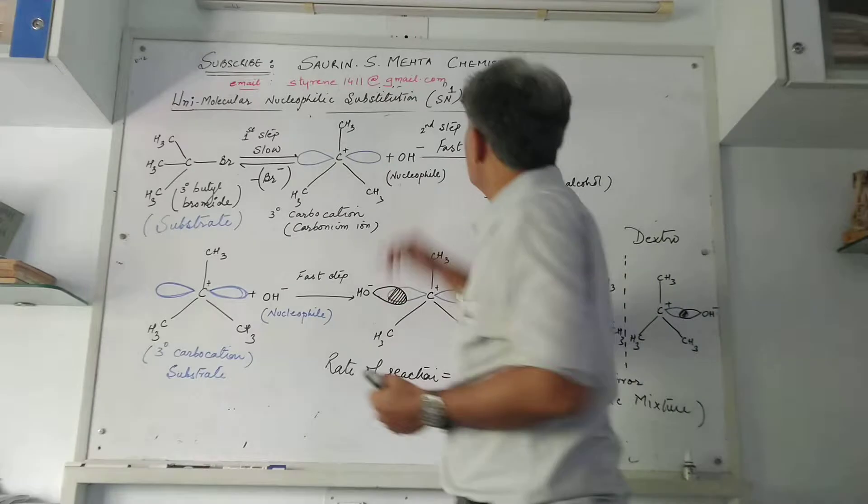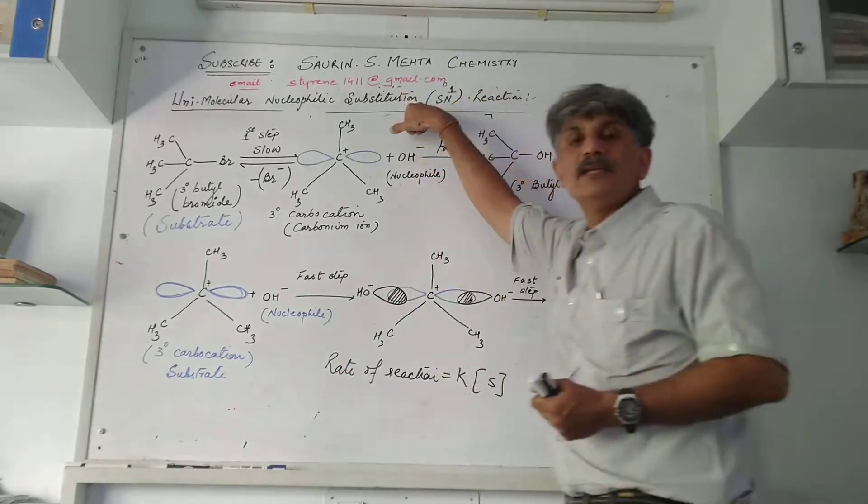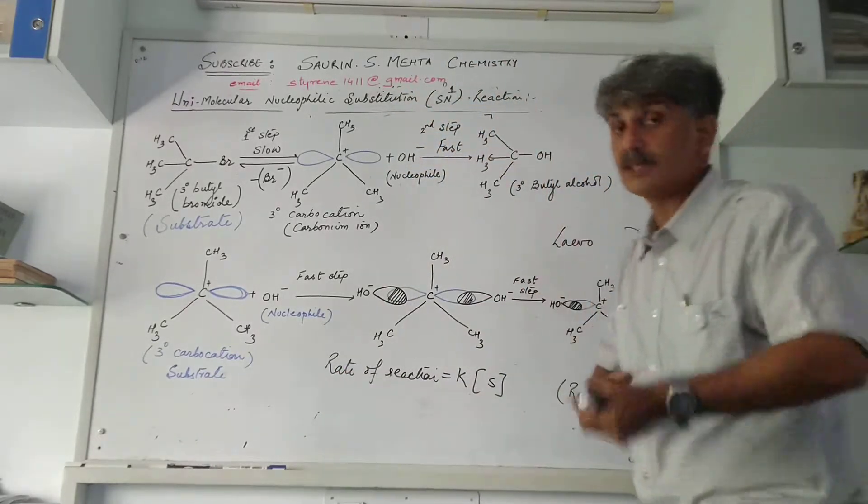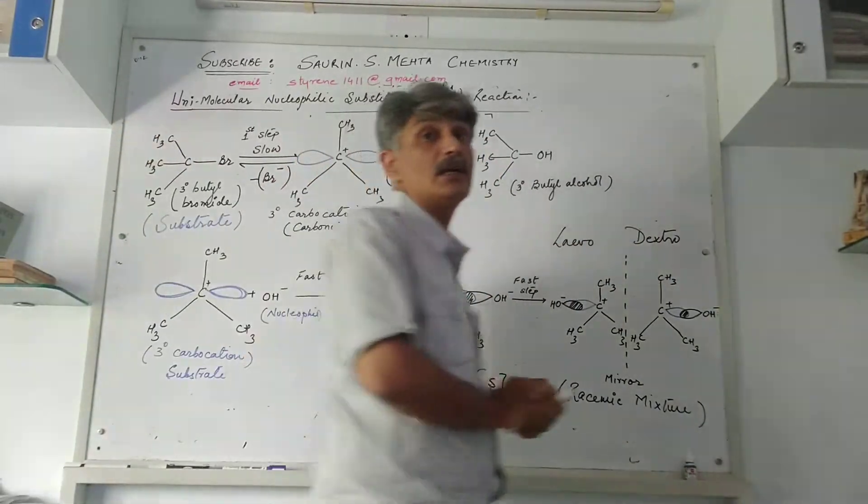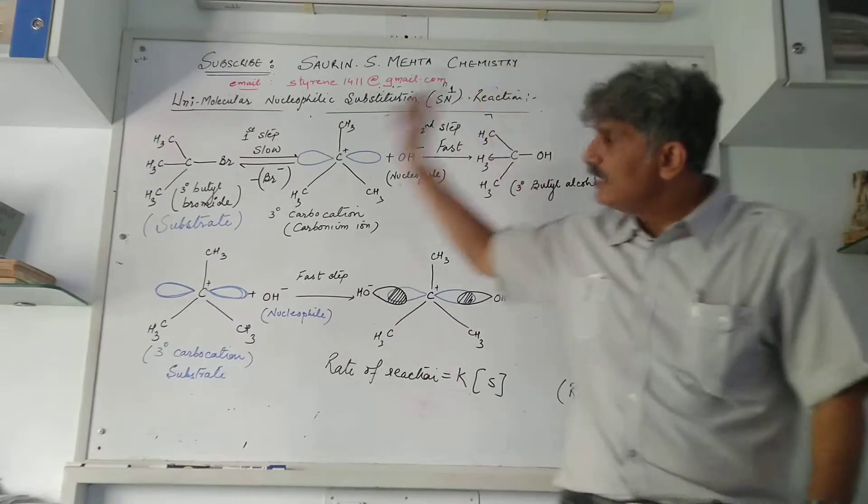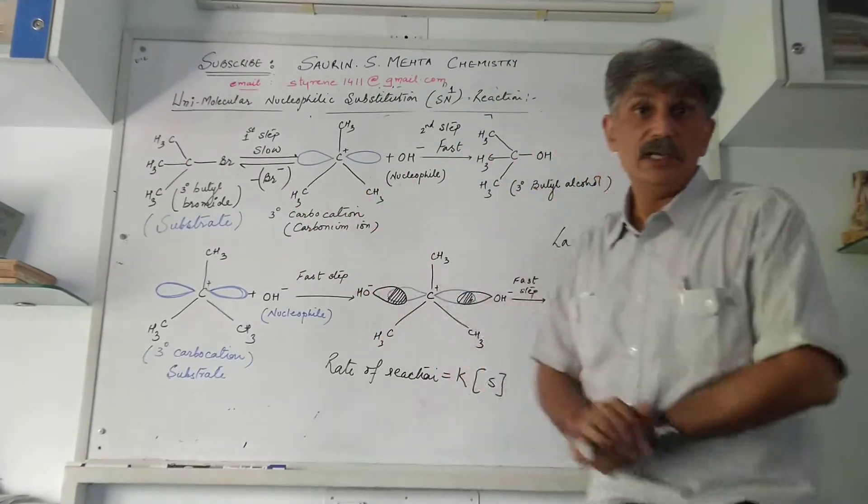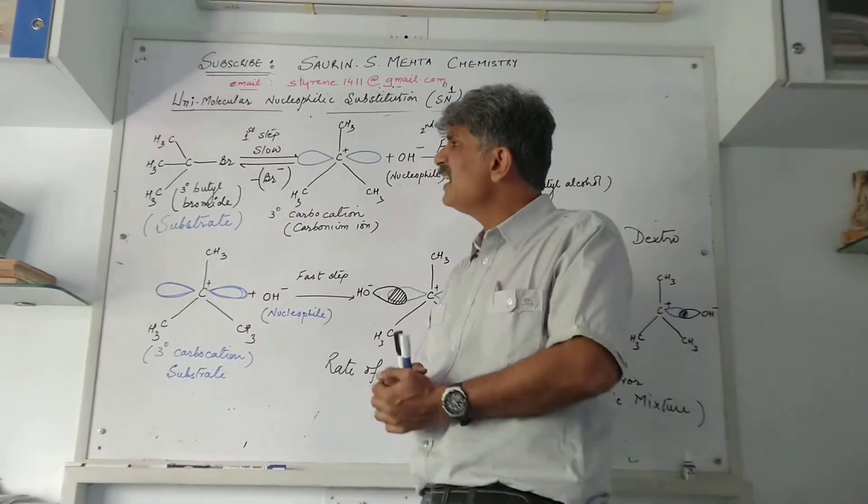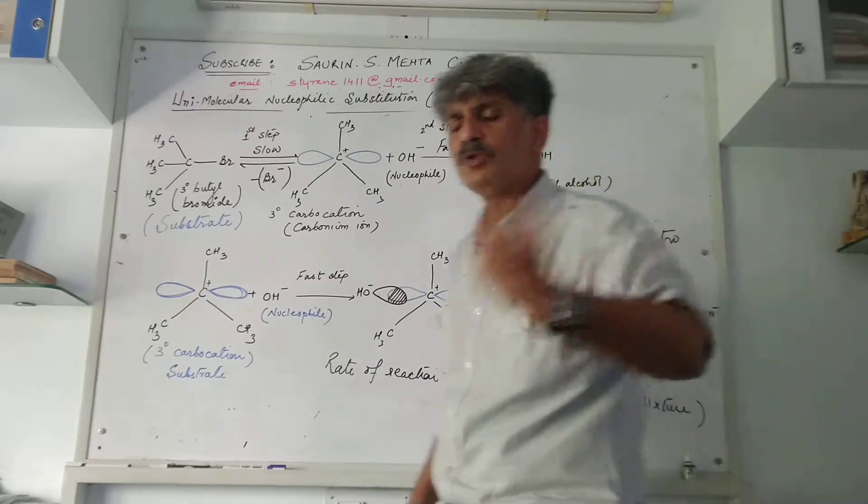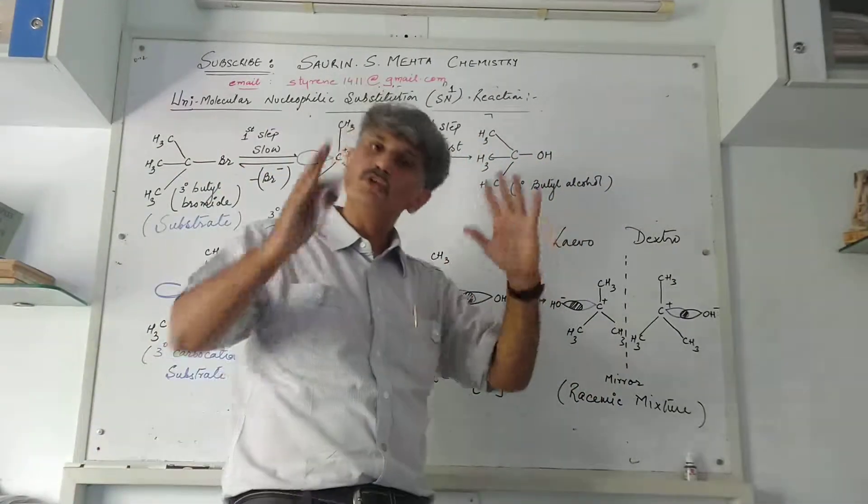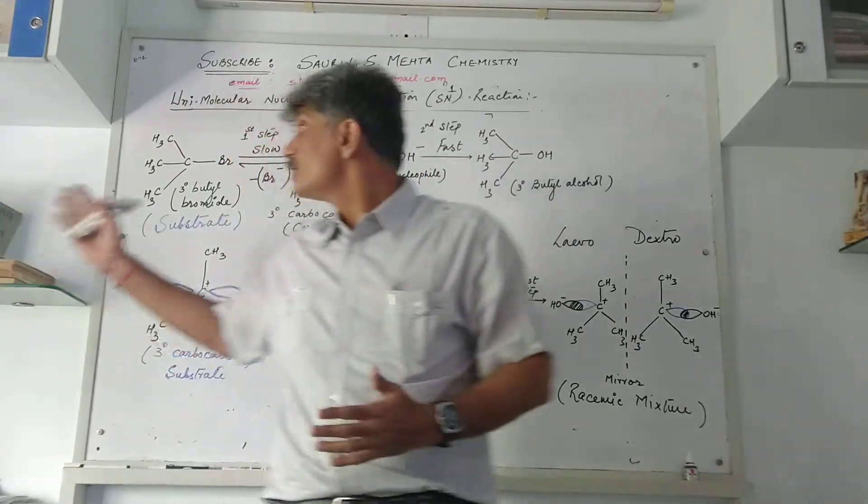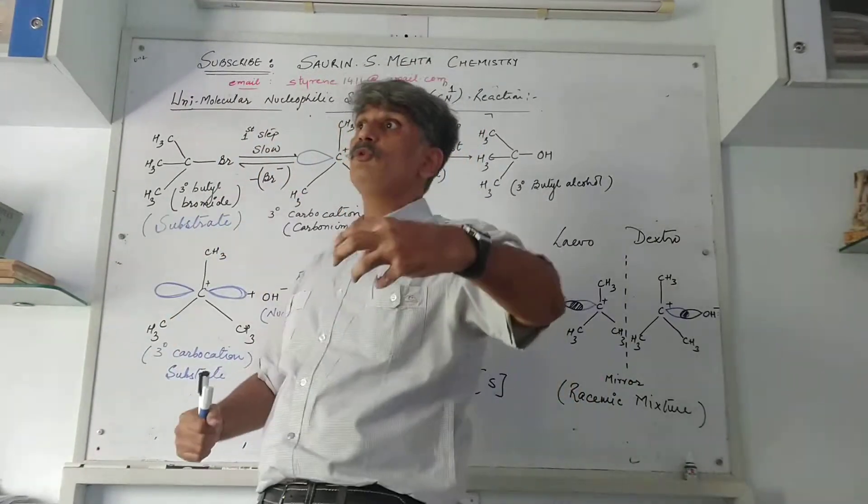That's the difference between SN1 and SN2. In SN2 there was no hydrolytic fission. Here, hydrolytic fission takes place initially. Tertiary butyl bromide is inactive, so its product is also inactive. But if you go with secondary butyl bromide, that is an optically active compound.